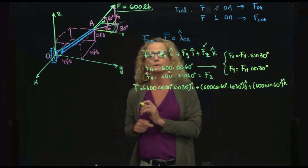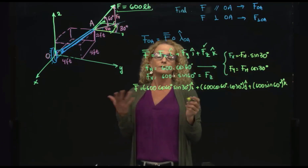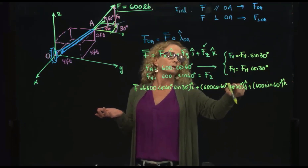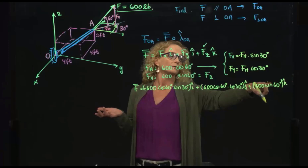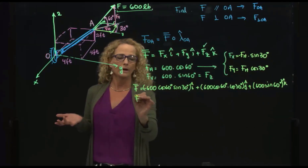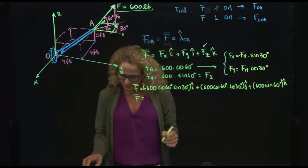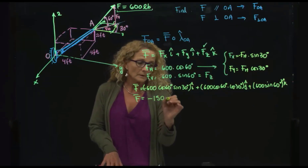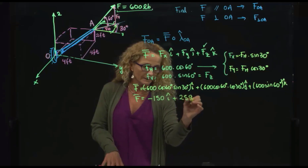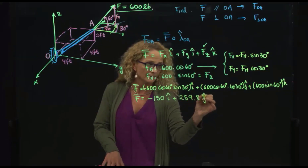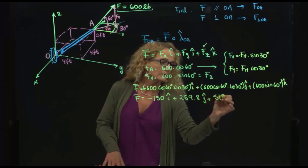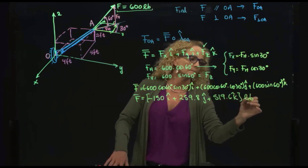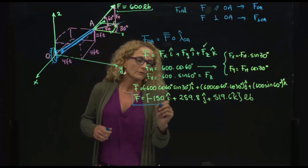We know that cosine of 60 is 1/2, sine of 30 is 1/2, and cosine of 30 is √3/2, and sine of 60 is √3/2. Substituting and doing the multiplications, the force vector is: negative 150i plus 259.8j plus 519.6k, all in pounds. We were able to find our first vector.